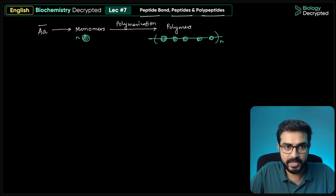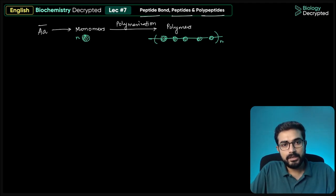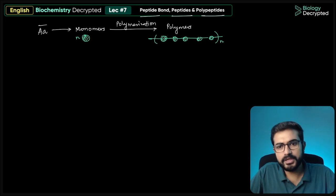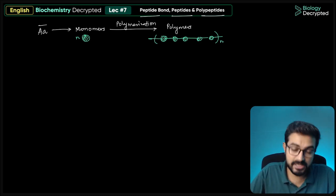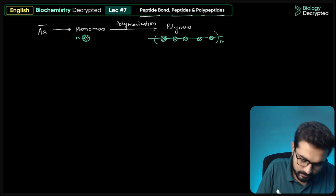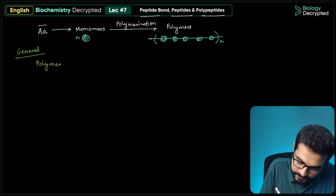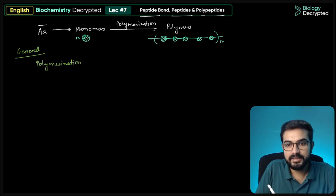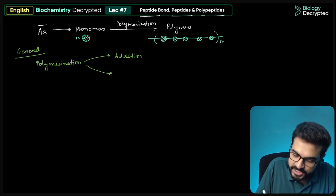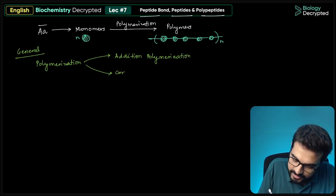When we talk about polymers, we're using a general term. There can be polymers of sugars, which are called polysaccharides, and there can be polymers of nucleotides, called polynucleotides or nucleic acids. In a general chemical sense, polymerization can be classified as addition polymerization and condensation polymerization.